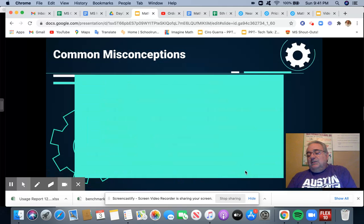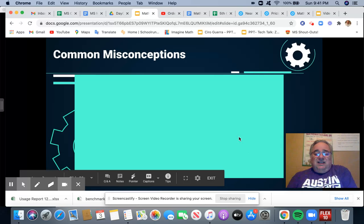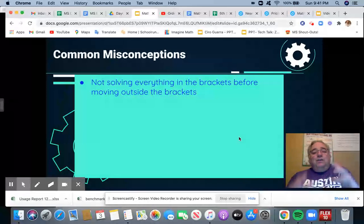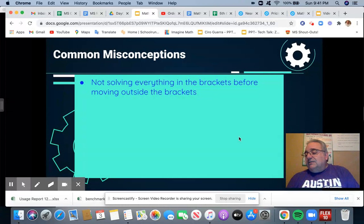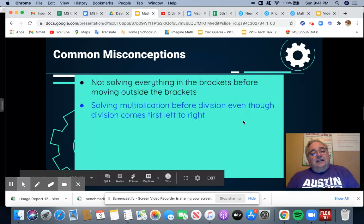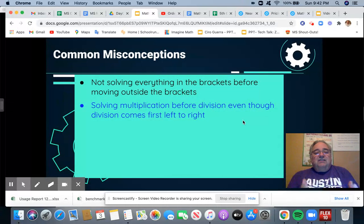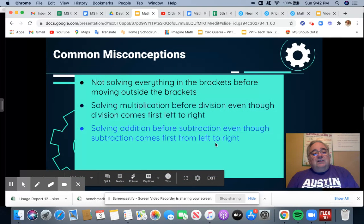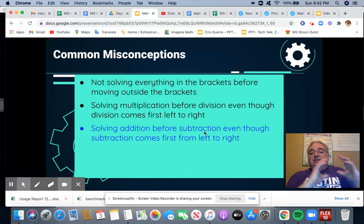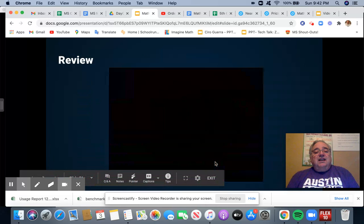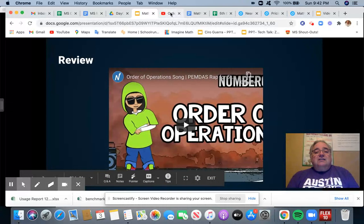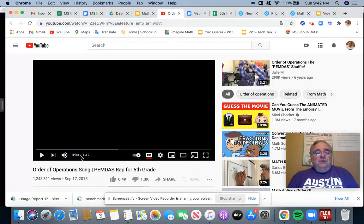Hey, guys, there's a couple of misconceptions we've got to look at. We do make mistakes, and sometimes those mistakes come out because we don't solve everything in the brackets before moving to the outside of the brackets. And sometimes we do multiplication before we do division, even though we have to do the problem from left to right. So if division comes first, do that first. And then the same thing with addition and subtraction. People believe they have to do addition before subtraction, even though the subtraction is first. Do subtraction first, then addition. They're at the same level. So here's a brain break song for you that might help you with that.